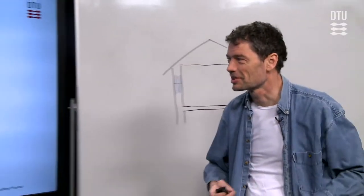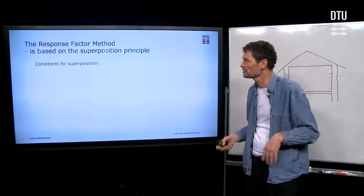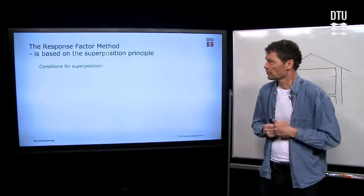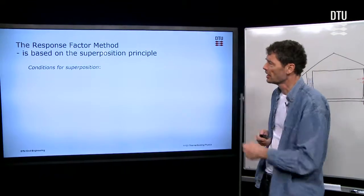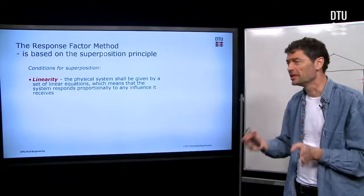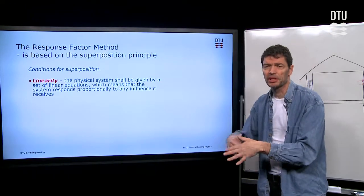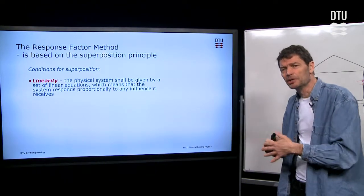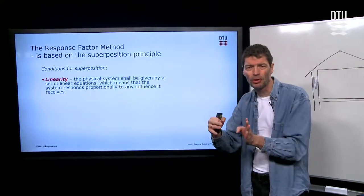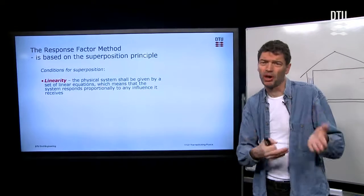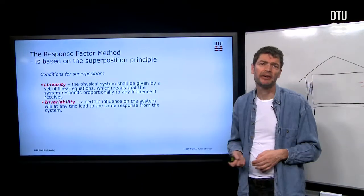So let's go back to the slides to explain a little bit more what it is. For the response factor method, a fundamental principle is superposition. And conditions for that is that we have linearity, which essentially means that if we have several responses, we can add them up. So for instance, if you have twice as large temperature impulse on a wall, then also the heat flows will double. That's in principle what this says with the linearity.